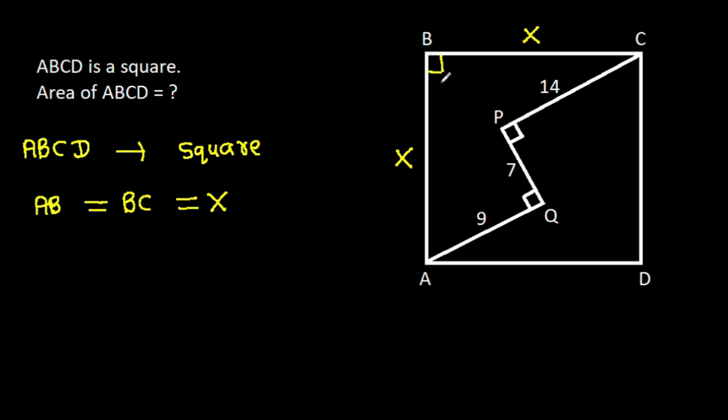If we extend AQ and from point C make a perpendicular on AQ, suppose this point is M, then PCMQ will be a rectangle.